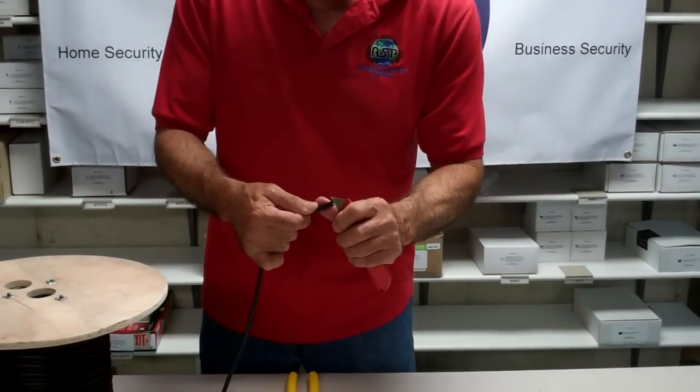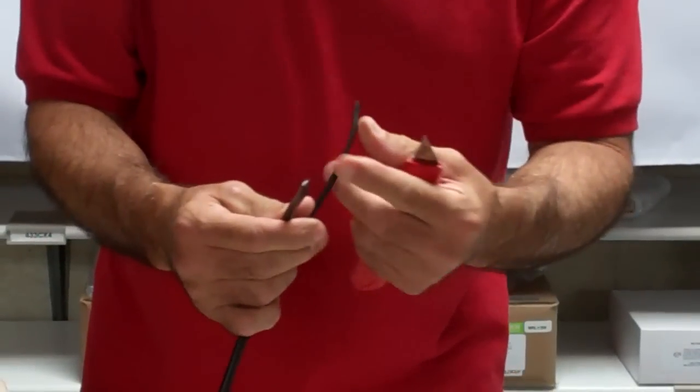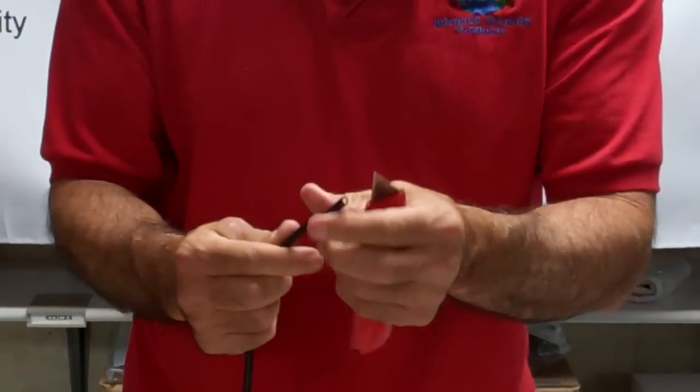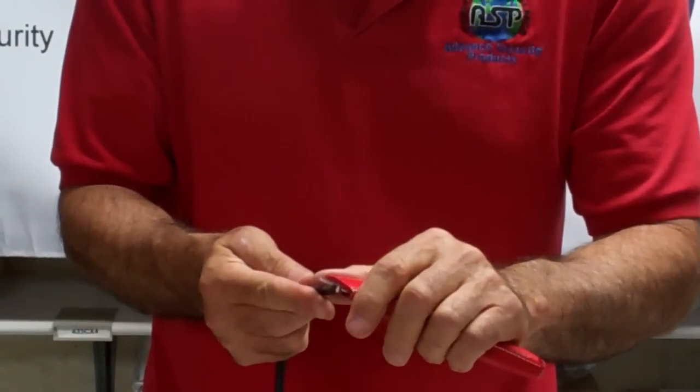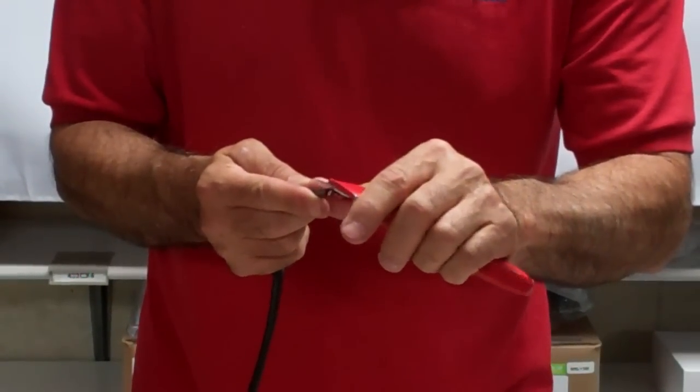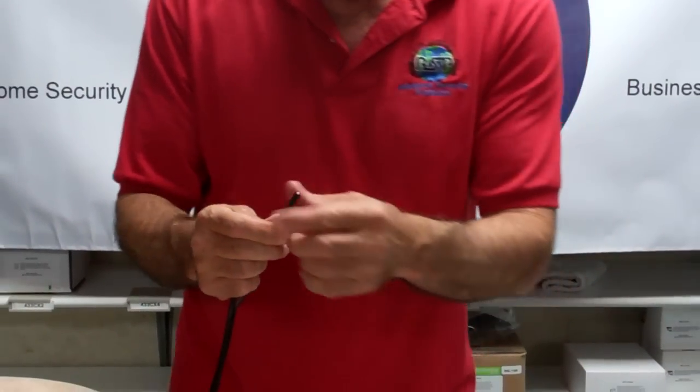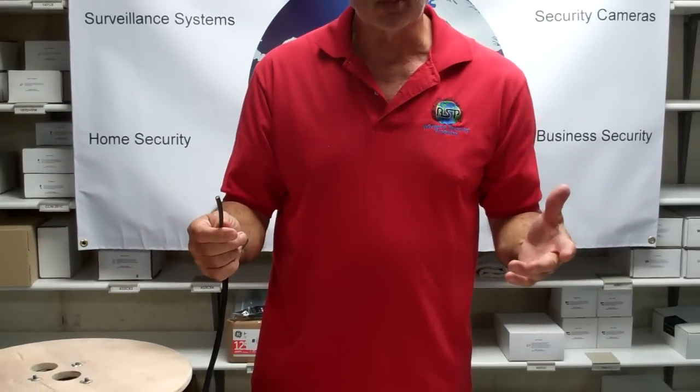I'm going to begin by separating the power and the RG59. I personally like to just shave off this little edge here from the molding from the factory to give it a good easy application when you're doing the stripping.